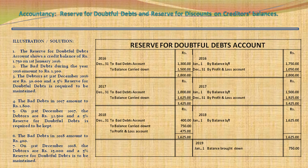Moving to next year: the balance carried down of Rs. 1,500 from 2016 forms the opening balance for 2017 — January 1, balance brought forward Rs. 1,500. Bad debts in 2017 amounting to Rs. 1,800 are recorded on the debit side as bad debts account Rs. 1,800. On 31 December 2017, the debtors are Rs. 32,500 and 5% reserve for Doubtful Debts is to be maintained. 5% of Rs. 32,500 comes to Rs. 1,625, recorded on the debit side as balance carried down Rs. 1,625. When we balance the account, the debit balance is Rs. 1,925, which is transferred to Profit & Loss Account.